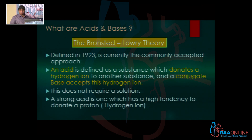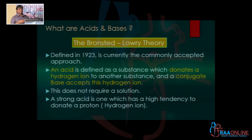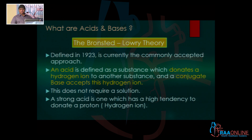It was defined in 1923. Here, an acid was defined as a substance that donates a hydrogen ion, and a base was a substance that accepted this hydrogen ion. It was called the conjugate base, which means that there is always a pair — a conjugate acid and a conjugate base.